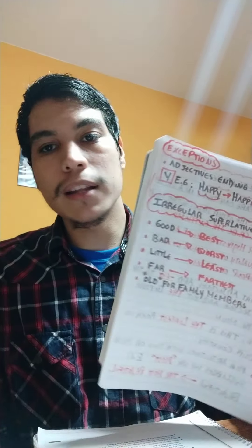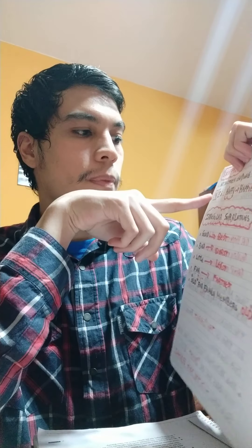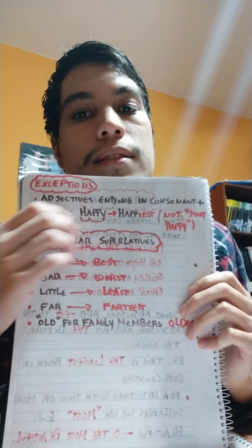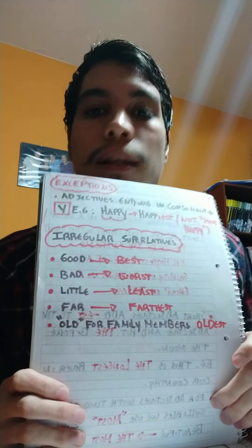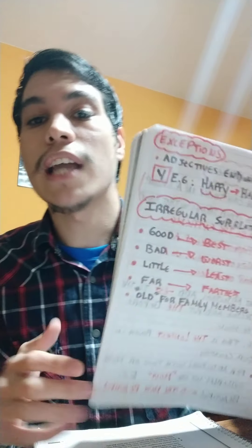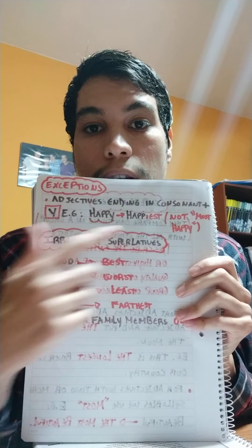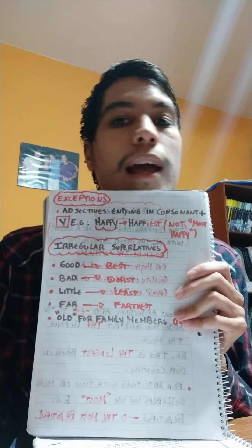Exceptions: adjectives ending in consonant plus Y — lo mismo que el comparativo. Adjetivos que terminan en consonante más Y. For example, happy → happiest. He's the happiest kid I have ever seen — es el niño más feliz que he visto, el más feliz de todos. Not 'most happy'. Happy es una palabra de dos sílabas pero no le agregamos 'most'; se agrega EST, en este caso IEST: happiest.